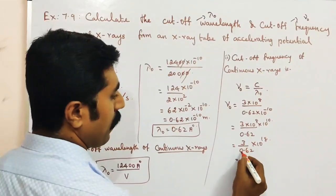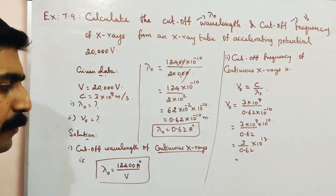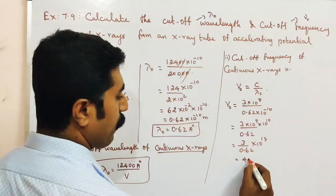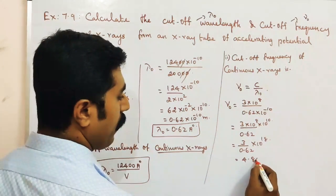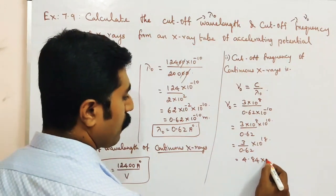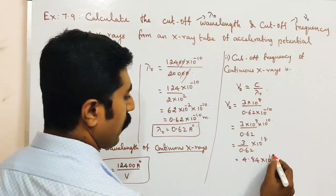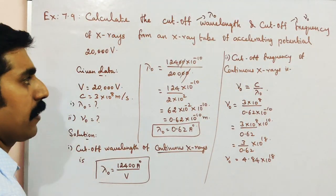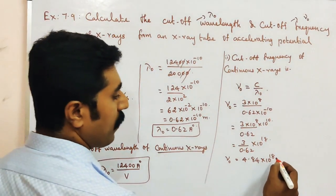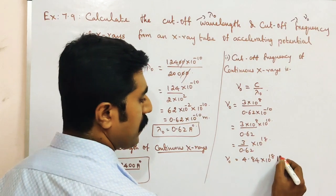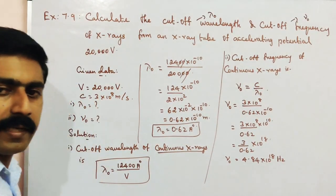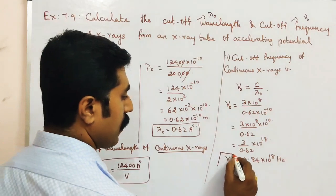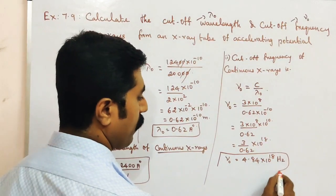Dividing 3 by 0.62 gives 4.84. So the cutoff frequency ν₀ = 4.84 × 10¹⁸ Hz. Frequency is measured in hertz, named after the scientist Hertz. So this is the cutoff frequency of the continuous X-rays.